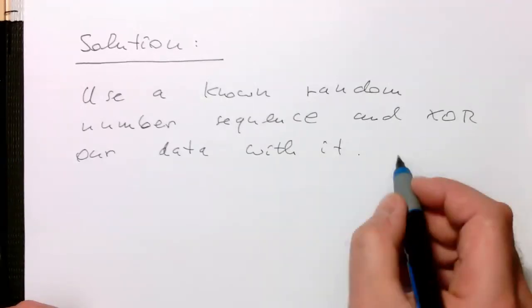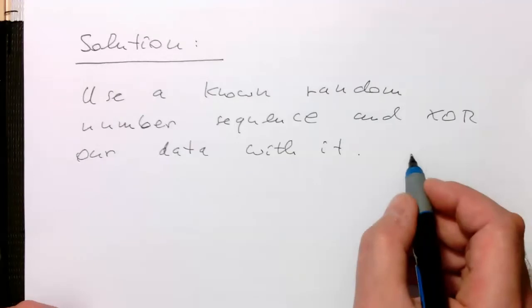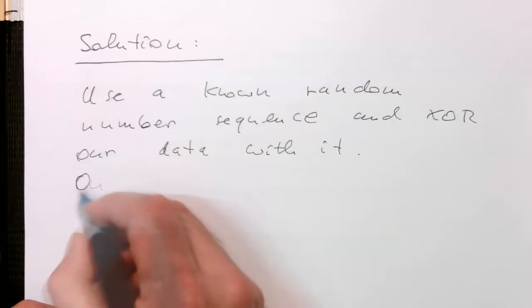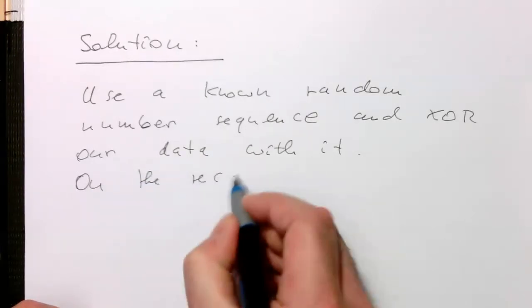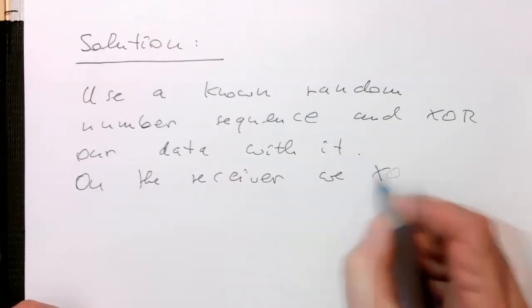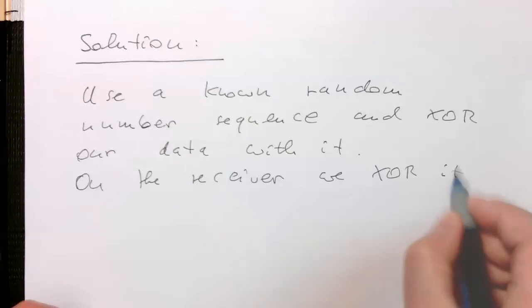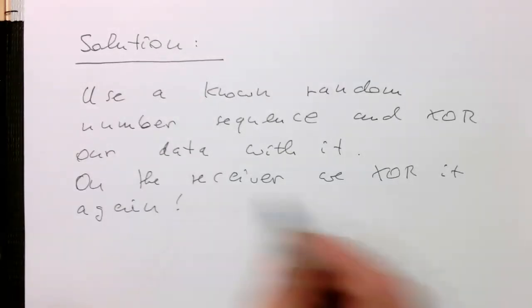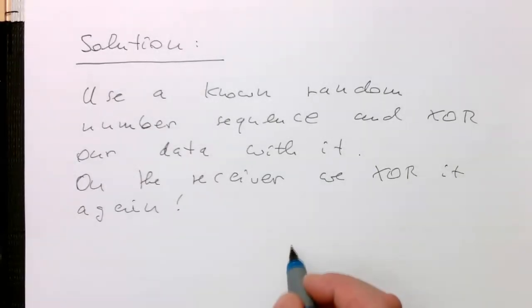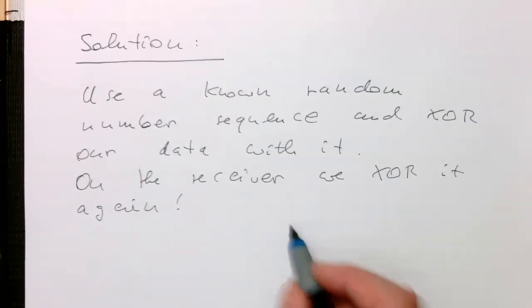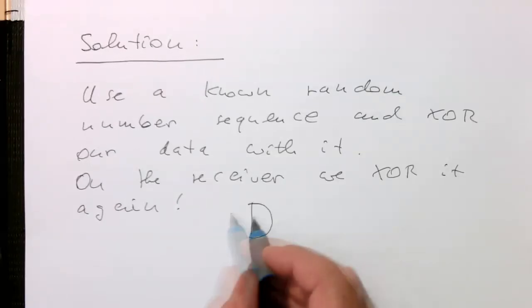and XOR our data with it. And then on the receiver, we just XOR the data again with that. So what does an XOR actually do? Remember, the XOR function is essentially a controlled inverter. So if this is our XOR symbol here,